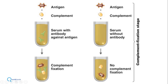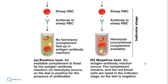In scenario two, because there is no antibody, there is only free antigen, and complement cannot bind to free antigen — so there is no complement fixation. Now we add the indicator system: sheep RBCs and amboceptor. In scenario one, because complement is already fixed, the sheep RBCs attract the amboceptor but remain intact. In scenario two, free complement is still available.